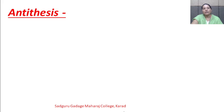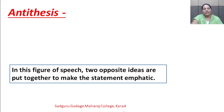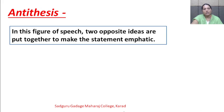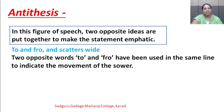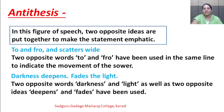The next poetic device is antithesis. In this figure of speech, two opposite ideas are put together to make the statement emphatic. Example: 'To and fro and scatters wide' — here two opposite words, 'to' and 'fro', are used in the same line to indicate the movement of the sower. Next example: 'Darkness deepens, fades the light' — two opposite words, 'darkness' and 'light', as well as two opposite ideas, 'deepens' and 'fades', have been used.